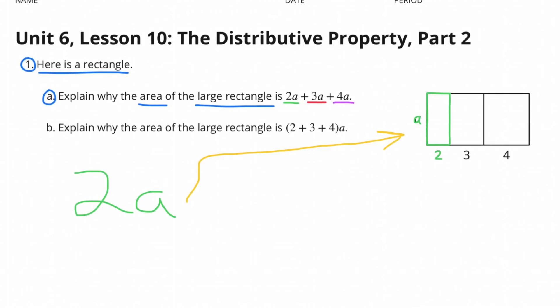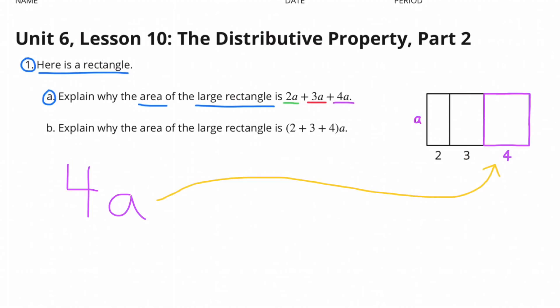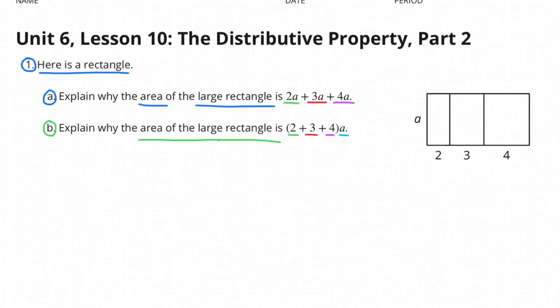This section is worth 2 times A. This section is worth 3 times A. And this section is worth 4 times A. Part B: Explain why the area of the rectangle is 2 plus 3 plus 4 times A.